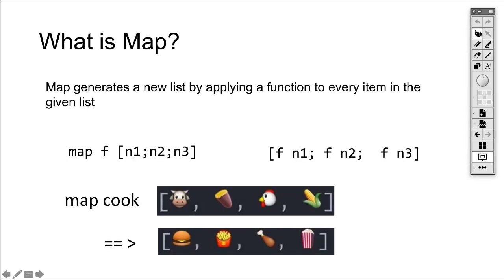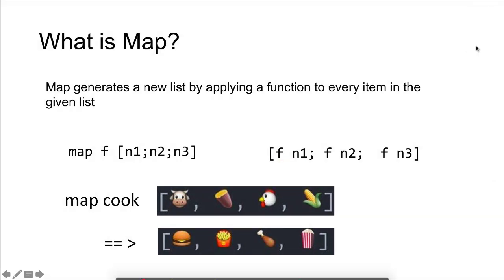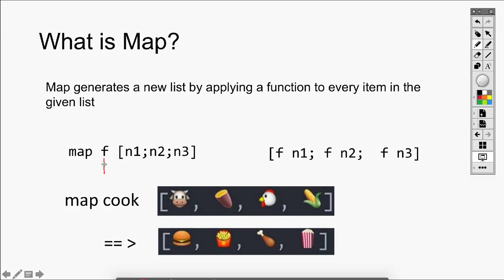What is map? Map is a higher-order function that takes another function and a list as arguments, applies that function to each member of the list, and generates a new list. For example, the map takes f as an argument and applies f to each element of the given list and generates a new list. Or, as shown in the example here, a map applies cook to each item and generates a new list.